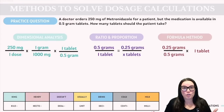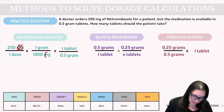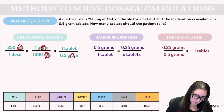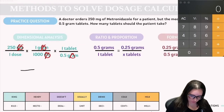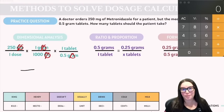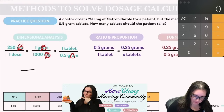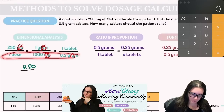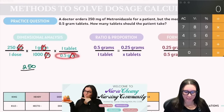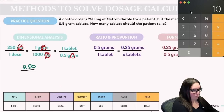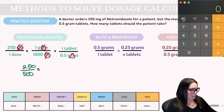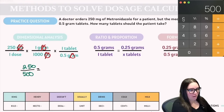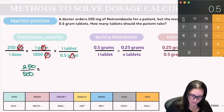Once we've set up our fractions, we just multiply. Milligrams cancel out milligrams, and grams cancel out grams. Multiplying across the top: 250 times 1 gram times 1 tablet gives us 250. Multiplying across the bottom: 1 dose times 1000 times 0.5 gives us 500. So we finish with division: 250 divided by 500 equals 0.5 tablets. Our patient is going to get half a tablet.